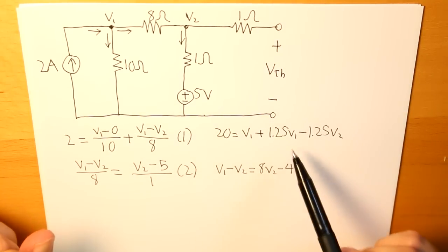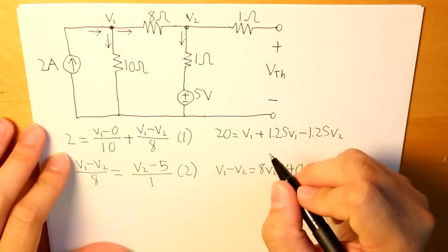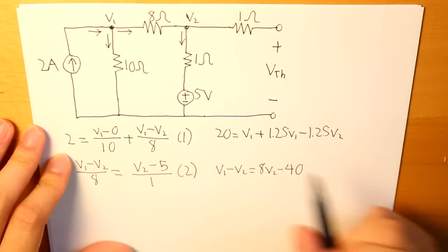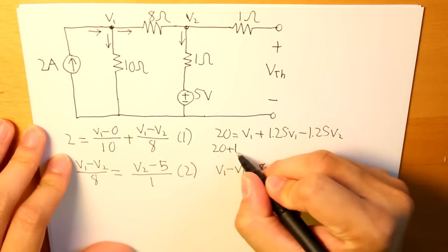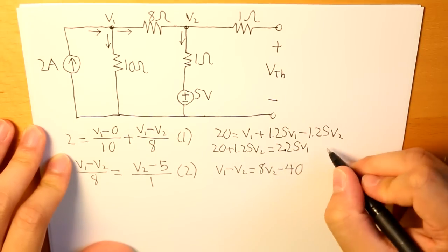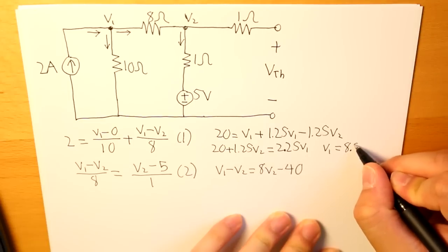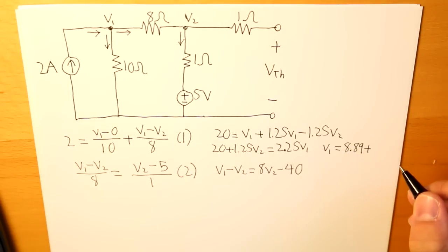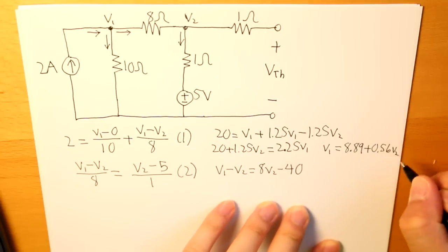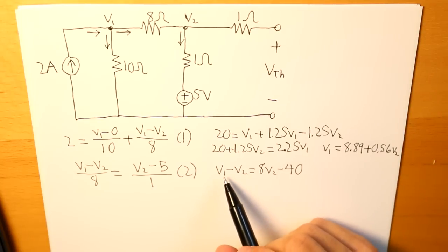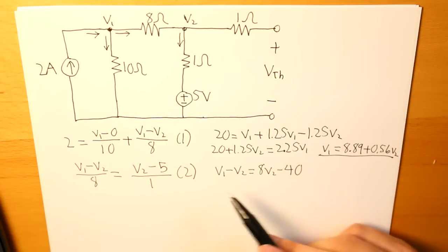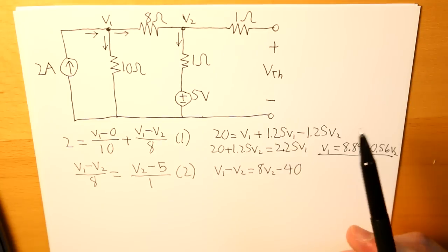For equation 1, let's isolate V1. So what we get is, if we put minus 1.25 V2 on the left side, what we get is 20 plus 1.25 V2 is equal to 2.25 V1. V1 is going to be 8.89 plus 0.56 V2. And now we can substitute, using this equation, we can sub in V1 into equation 2 to find what our V2 is going to be.